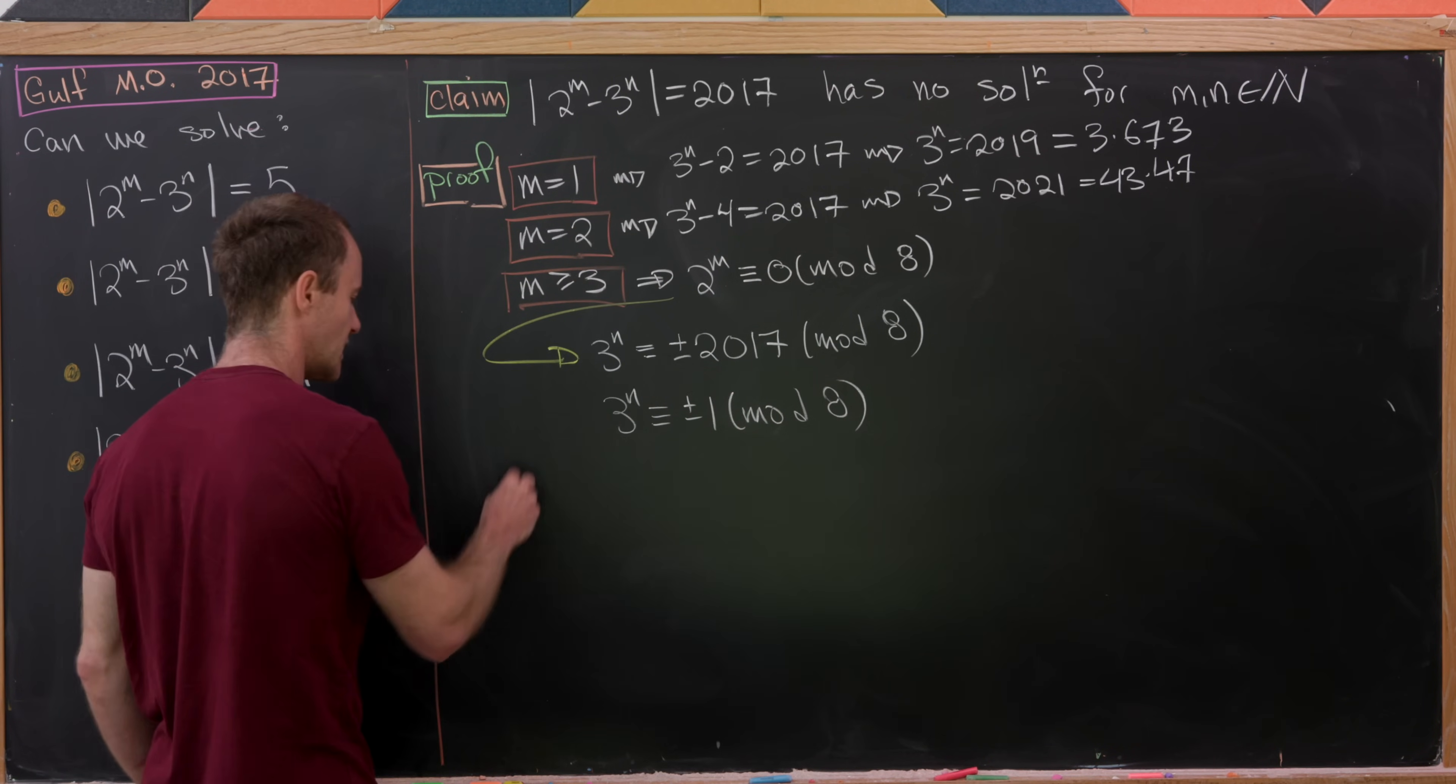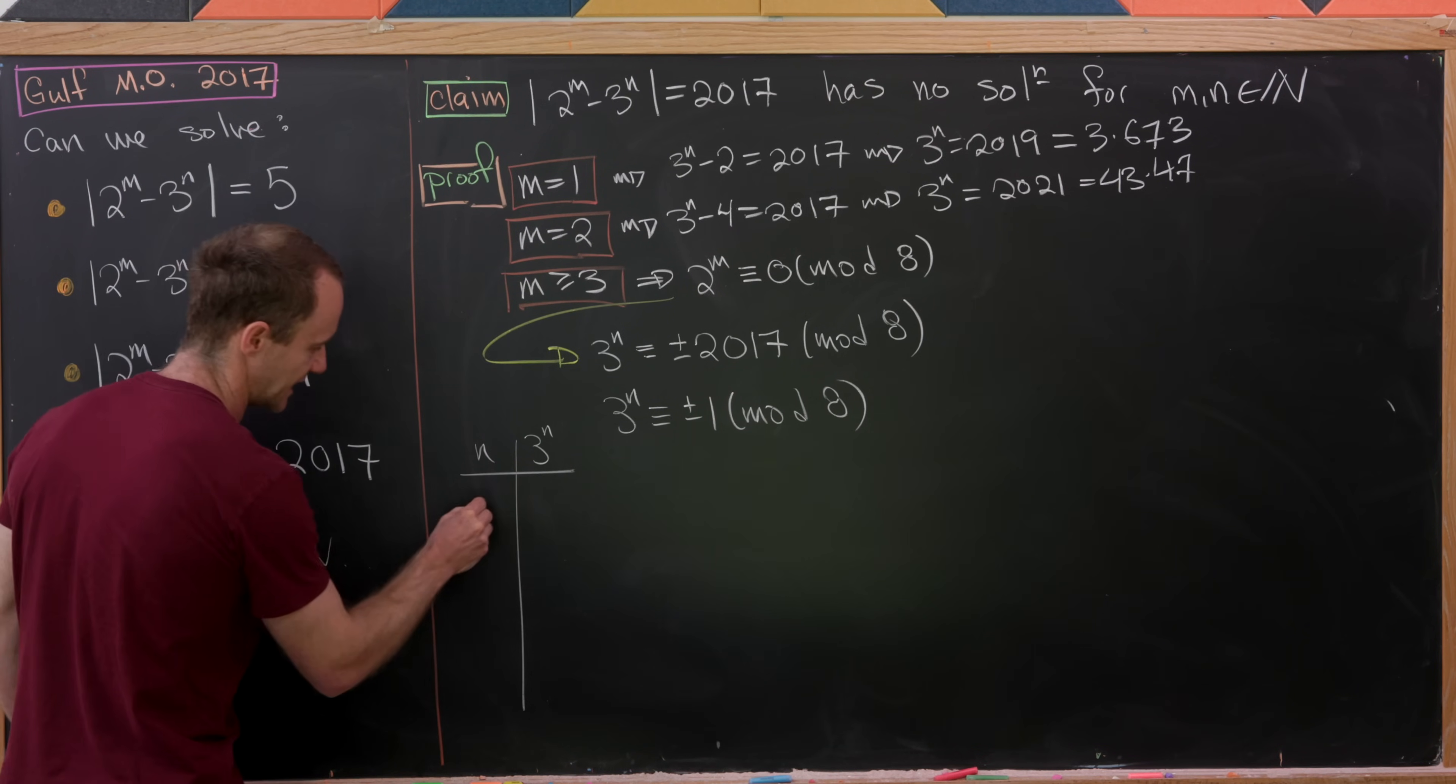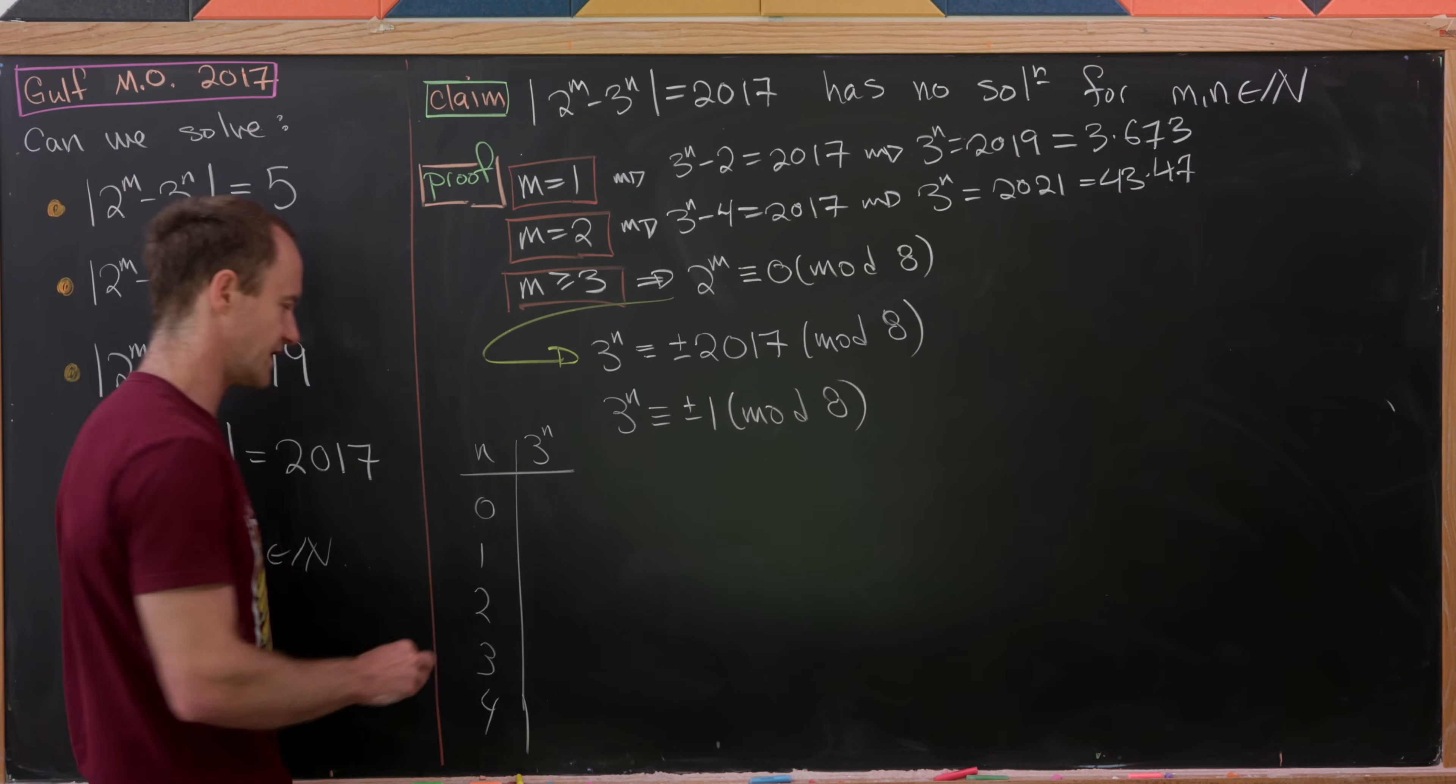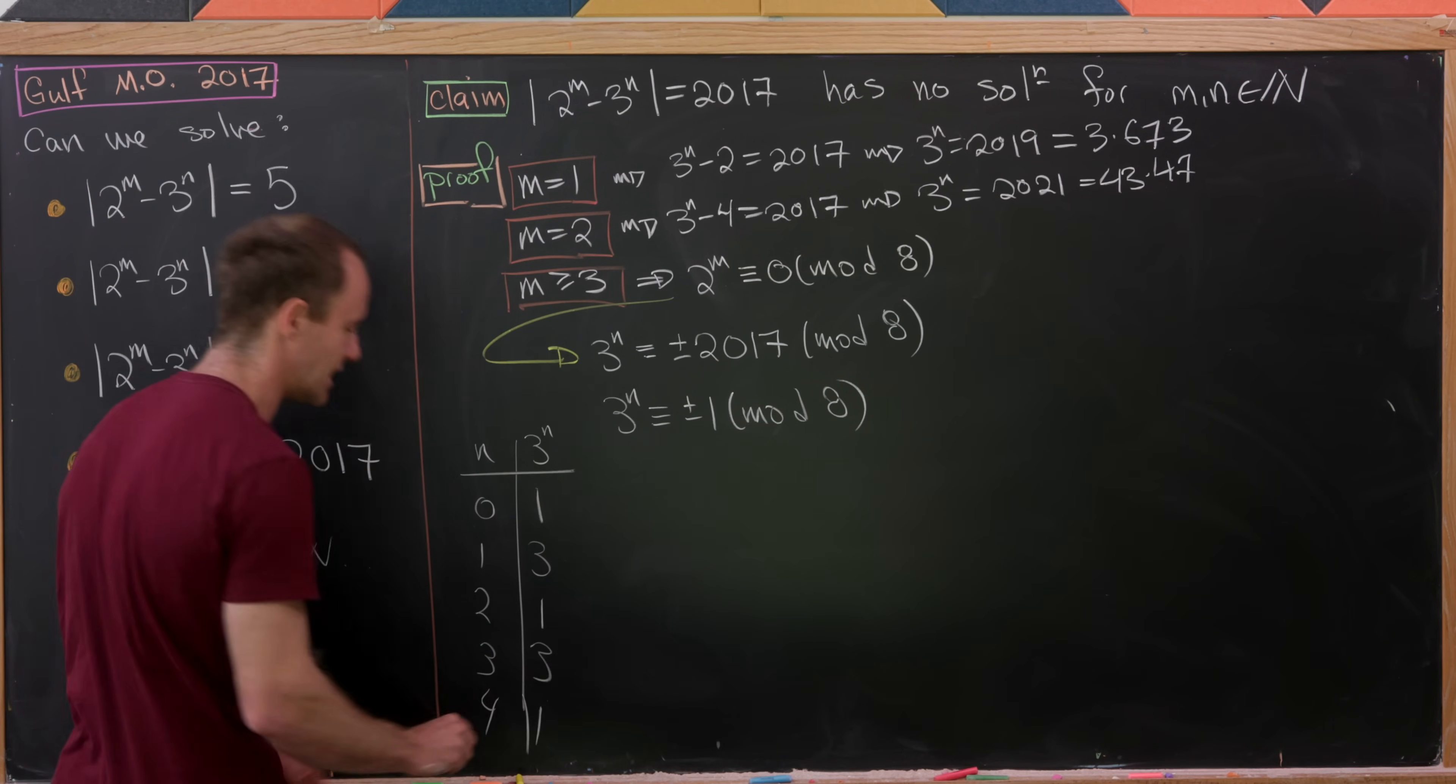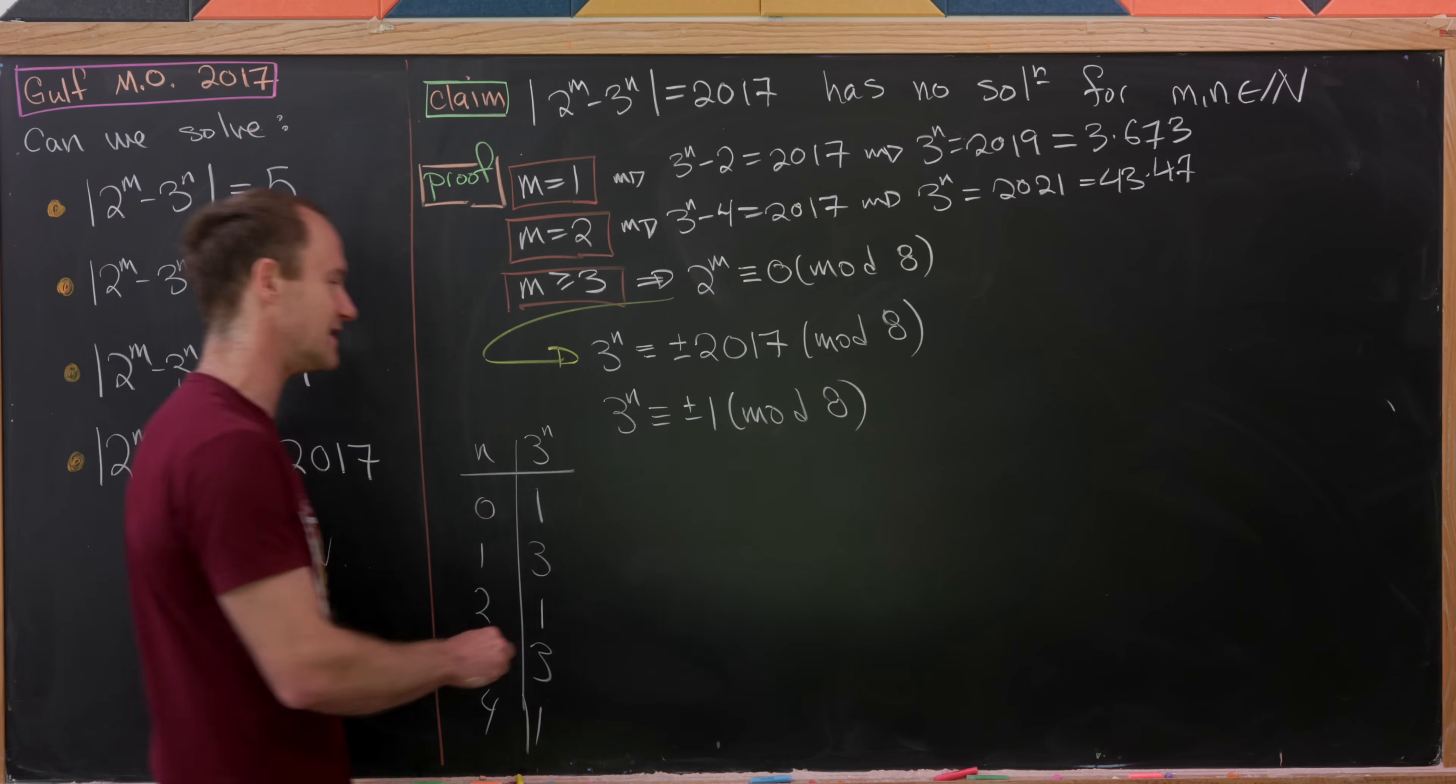But now let's just make a chart of powers of 3 mod 8 to get a handle on what n could be. So let's do n and then 3 to the n, we're working mod 8. We need n to be 0, 1, 2, 3, 4. That should be far enough to see some repetition. So 3 to the 0 is 1, 3 to the 1 is 3, 3 squared is 9 but 9 is 1 mod 8. 3 to the 3, well that's going to be 3 again. And then notice it will repeat. And the important thing to notice here is the only time that you get 1 mod 8 is when n is even.